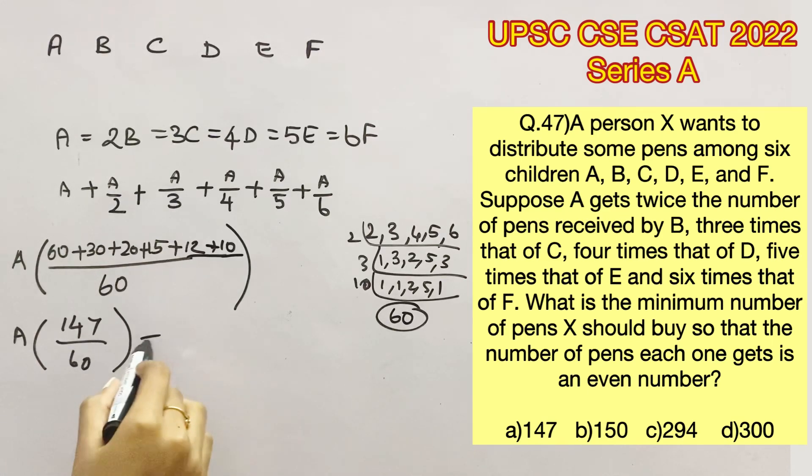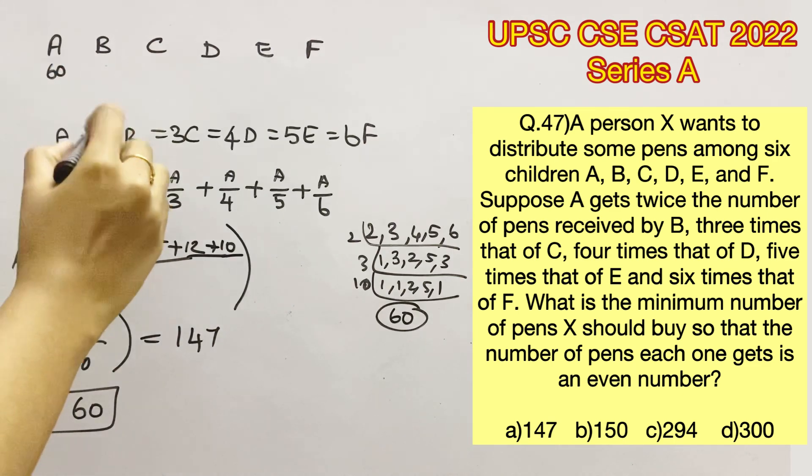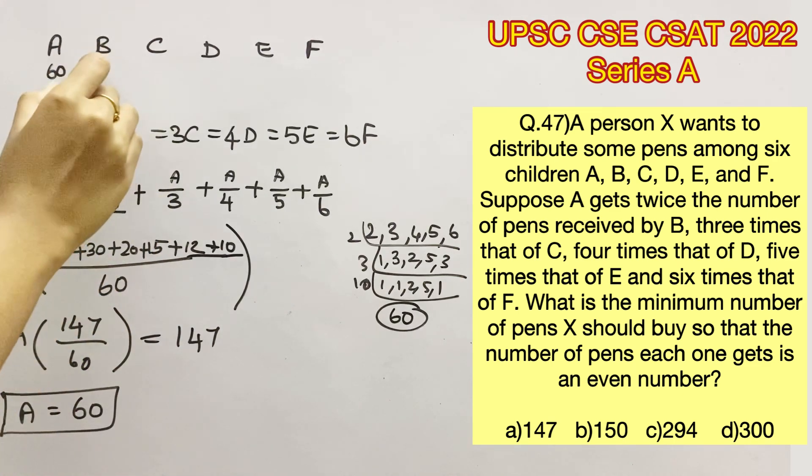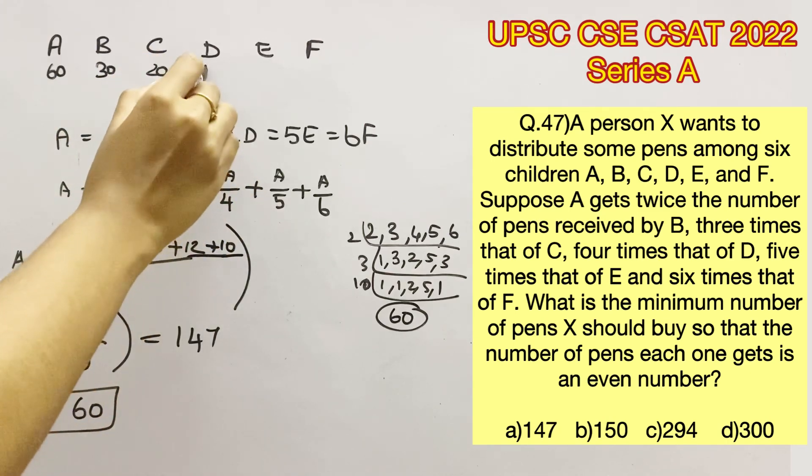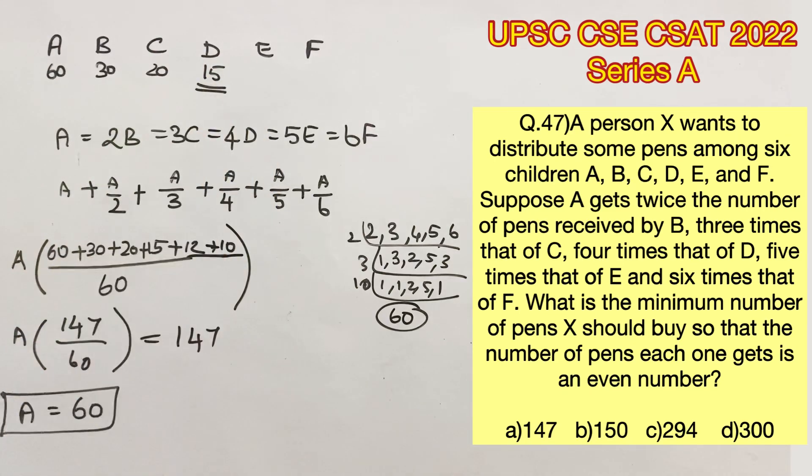Now they are asking for the minimum number of pens, right? In the given options, 147 is the minimum number of pens. So let's check with that. I am assuming the total number of pens to be 147 here. Then we will get the number of pens A has as 60. Now we can substitute this value throughout and check if everyone has even number of pens. Here A will be 60. B will be A by 2, so 60 by 2 is 30. C will be A by 3, which will be 20. A by 4, which will be 15. But 15 is an odd number. So we can eliminate this option.